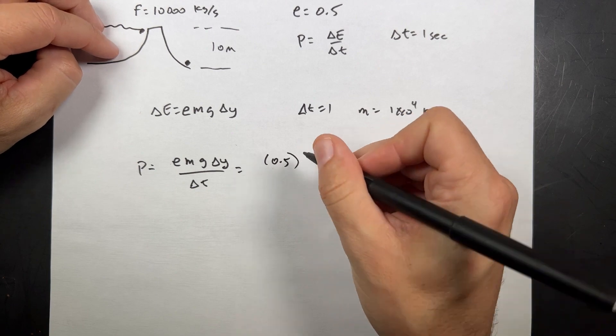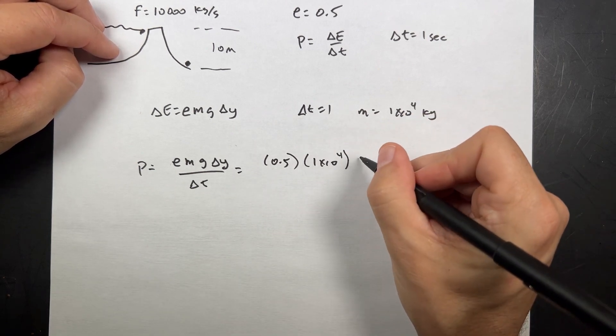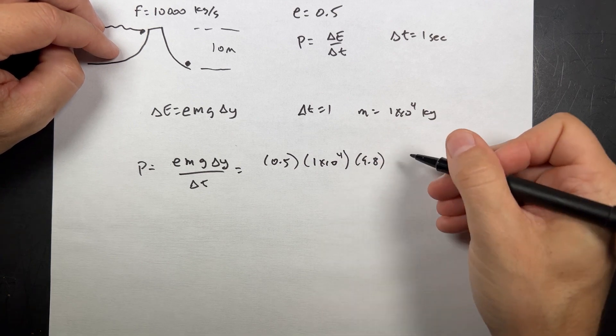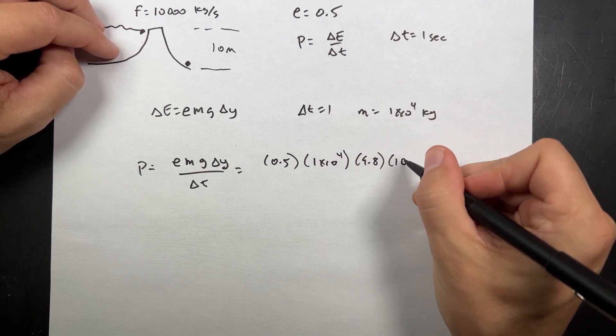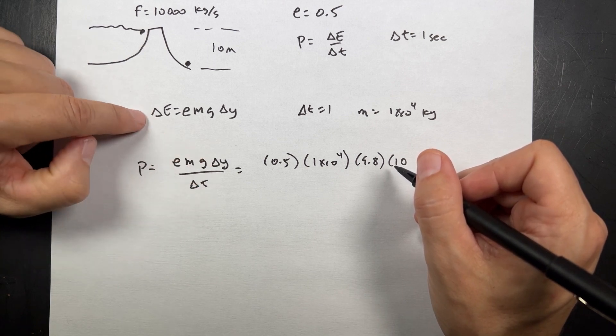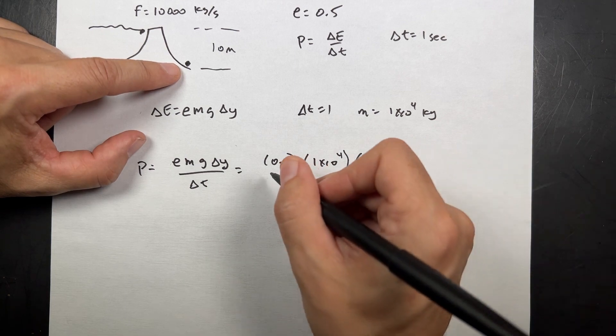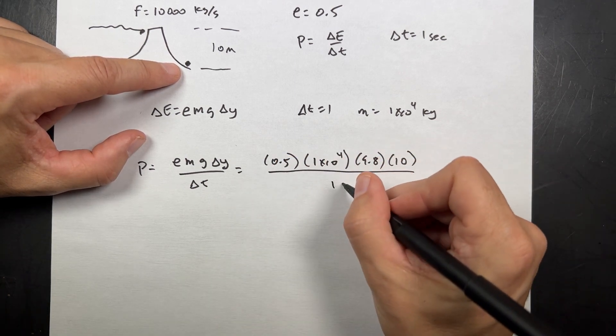So I get 0.5. The mass is one times ten to the fourth. G is 9.8. Delta Y is going to be 10. This is the change in energy of the water is negative. So the change in energy of the power station is positive. So I kind of glossed over that. That's fine. And this is all over one second.